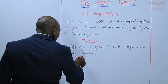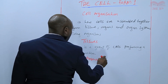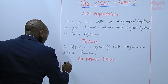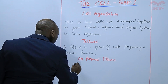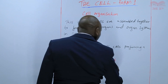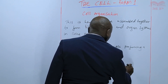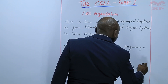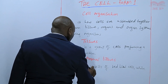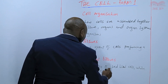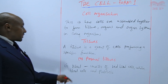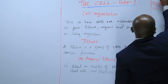We have animal tissues. In animal tissues, we have blood, which consists of red blood cells, white blood cells, and platelets. All those are blood cells — cells that make the tissue that we call blood.